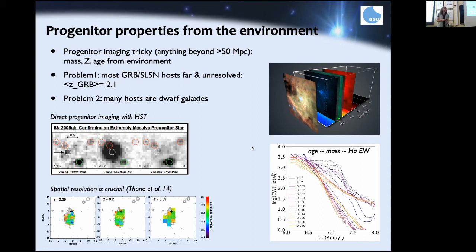For GRBs, the main problem is that they are all very far away — the closest long GRB was at 160 Mpc. You can single out stars with HST only to about 30–50 Mpc. Moreover, GRBs and superluminous supernovae usually occur in dwarf galaxies that are very rarely in Hubble's field of view by chance, so you usually don't have pre-explosion imaging.